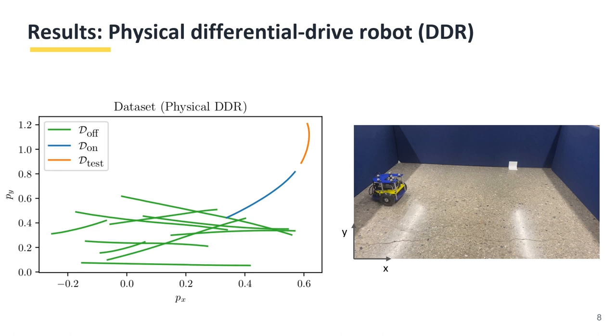We also tested our method on a real-world robot. Here is a demonstration of how we collect data from the differential drive robot using the mocap system. The offline training range is shown by the green line. The test dataset follows the online dataset, which is out of the training distribution.